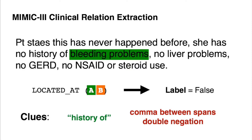You could also think of something like 'no history of bleeding problems, no liver problems.' These are disconnected concepts. You could say the same 'history of' clue tells you you're living in a disease context, a disease is truly there, but you have something like a comma splitting up these concepts. You have double negation — 'no history of bleeding problems, no liver problems' — that's essentially just two disconnected concepts. These are the general types of ideas that apply to this task.